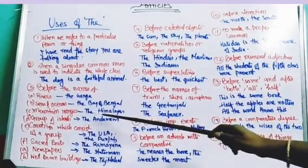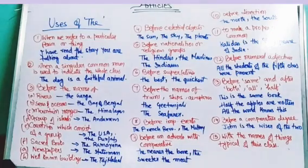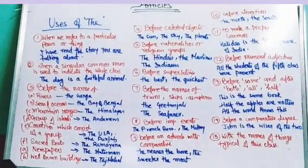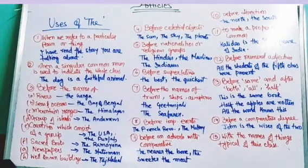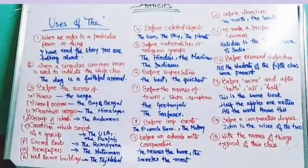Groups of islands also use 'the,' like the Andamans, the Lakshadweep, the Philippines. Countries which consist of a group, like the USA, the Punjab, the UK. And some other places like the Deccan - with particular regions we may use 'the,' but not with all other places. We would never say 'the India' or 'the Gujarat.' We use 'the' before sacred books, like the Ramayana, the Gita, the Upanishads.